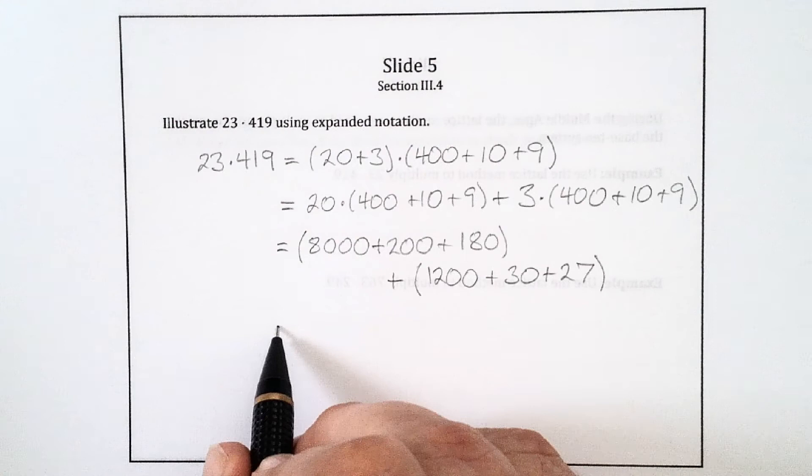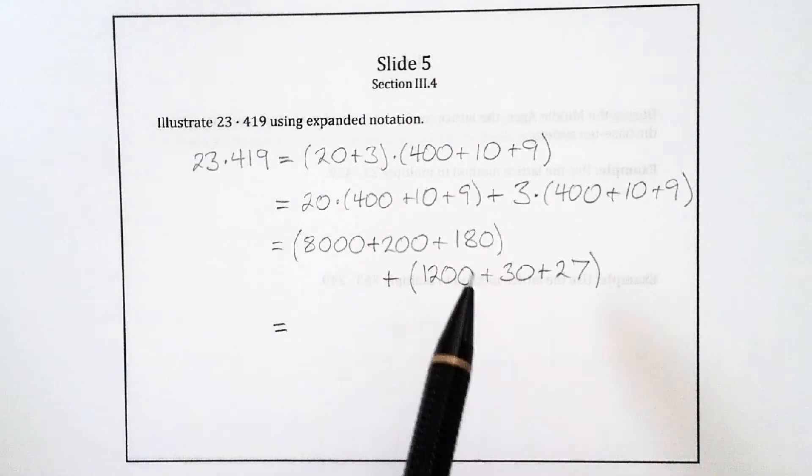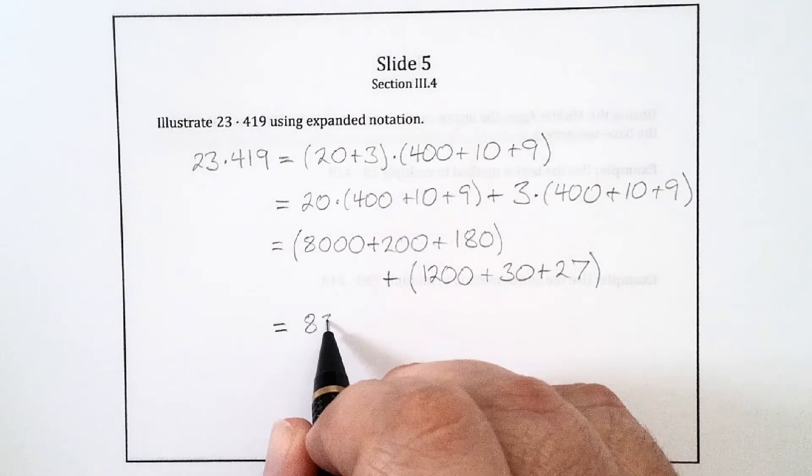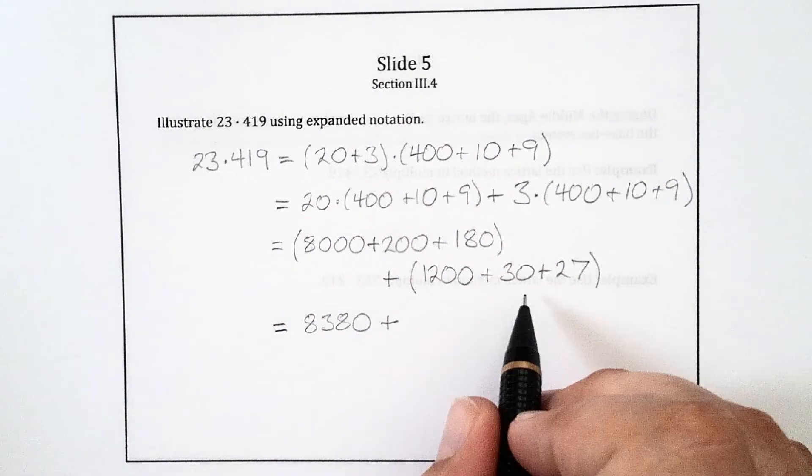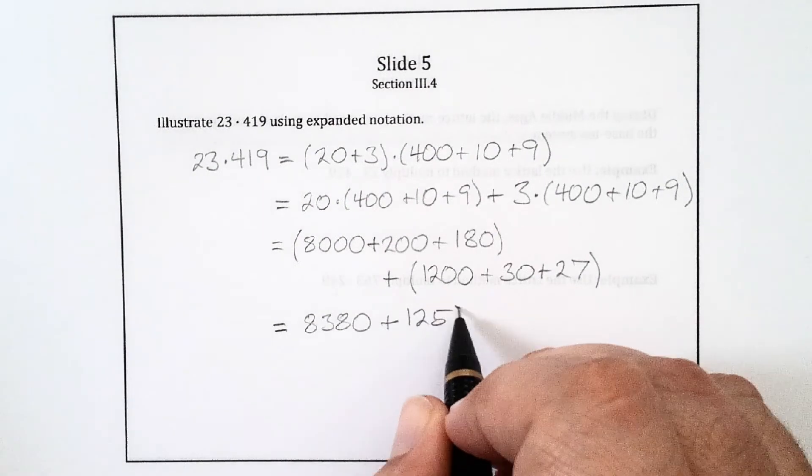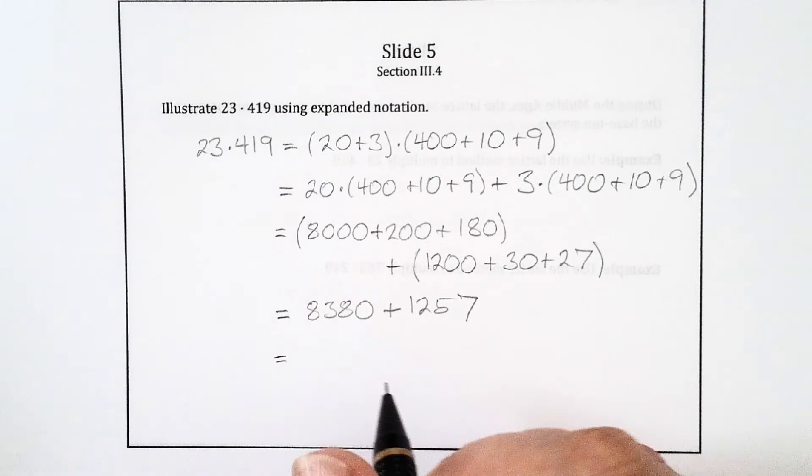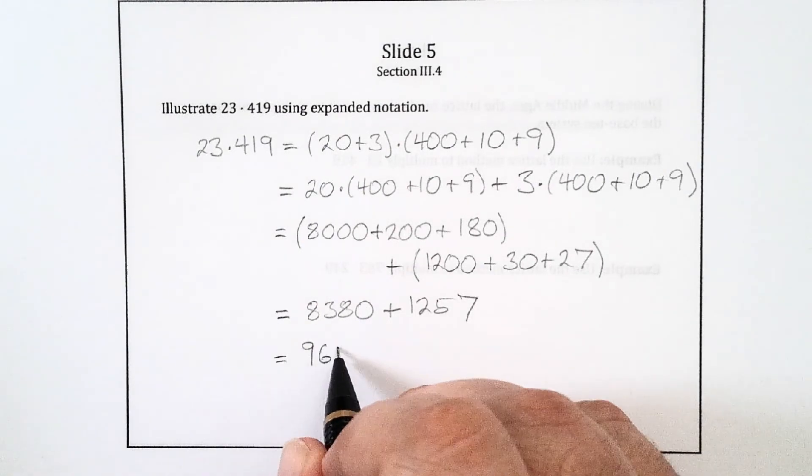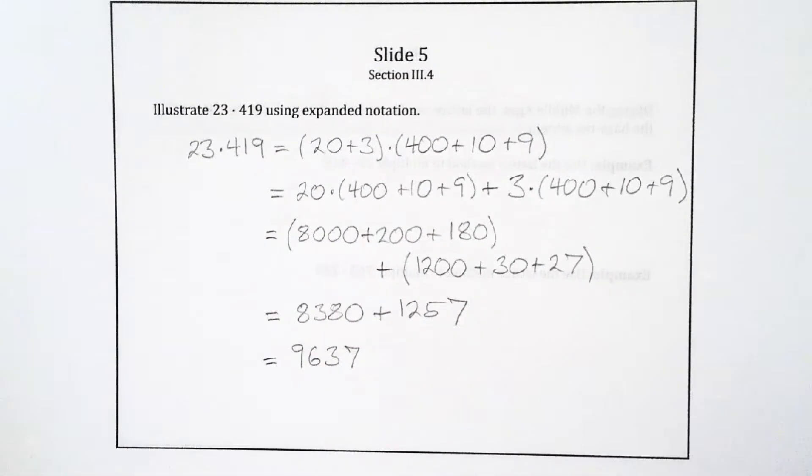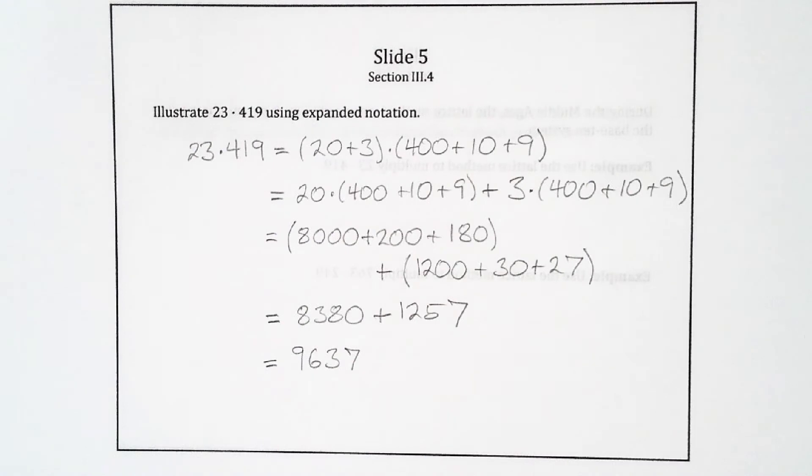Now I just have to add these six products and that will be the total product. I'll do that in two steps, just because it's written horizontally and it's kind of hard to do that in your head. But these first three are going to add up to 8,380. The second three add up to 1,257. And then when I put those together, I get 9,637. So we used the base 10 system to break this product down into six simple products, and then we added those products together.